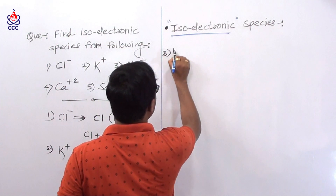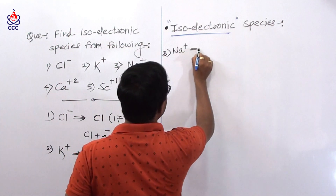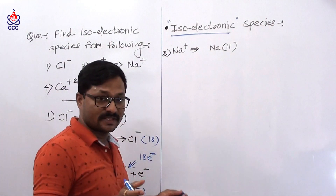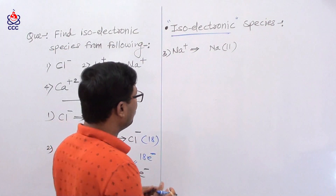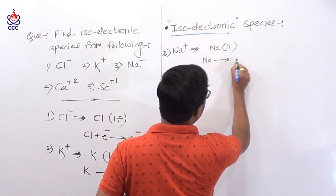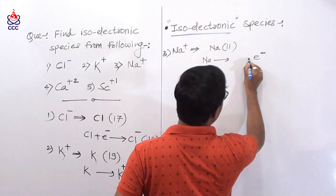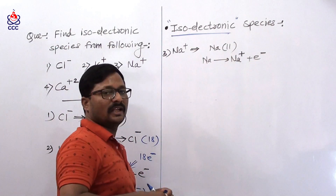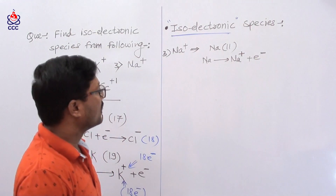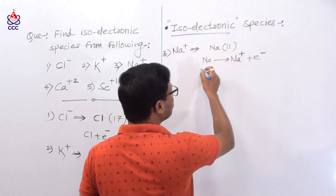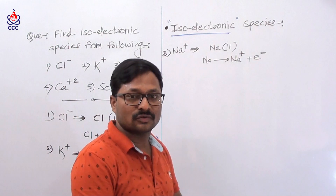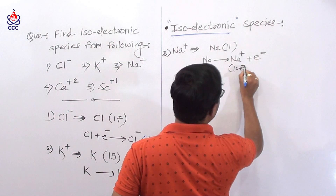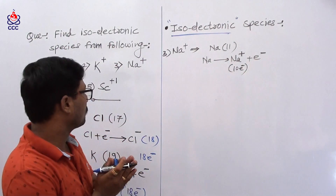The third example is Na+. In the case of Na+, sodium has atomic number 11, so it has 11 electrons. When sodium loses one electron, it forms Na+ ion. Therefore Na+ ion has 10 electrons.